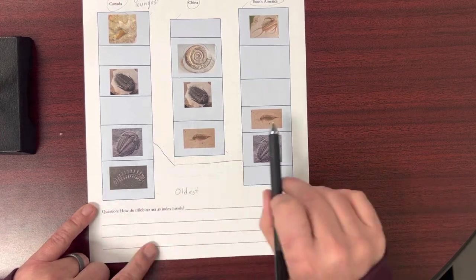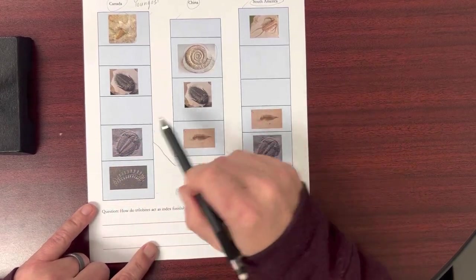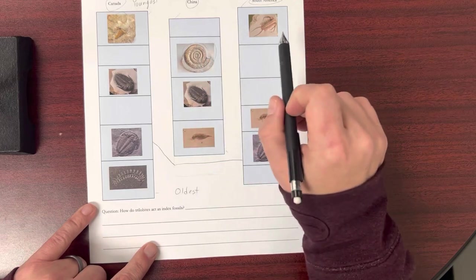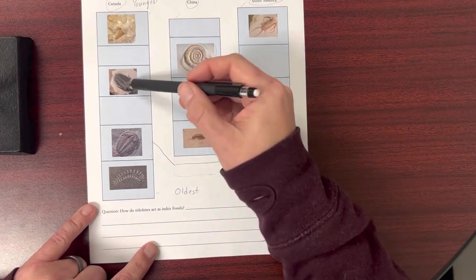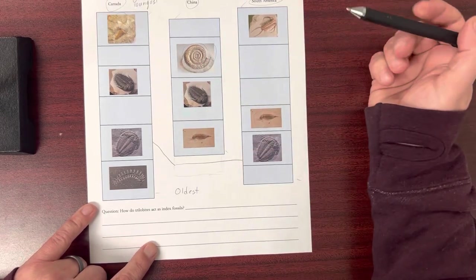And I want you to do that. I want you to go across and match up the correct layers. Some will only match up with two, and some will match all three across. But use the trilobites as your guide. They're going to all be from the same rock layers.